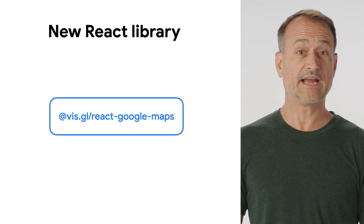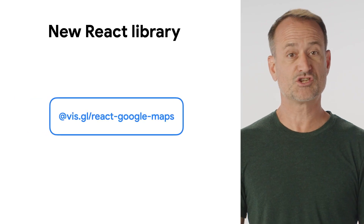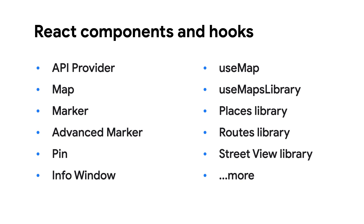It's the React Google Maps Library in the VizGL organization. React is a popular open-source framework for building front-end web user interfaces based on components that are driven by the state of data that changes over time. VizGL React Google Maps comes with a collection of React components to create maps, markers, and info windows, as well as a set of hooks to use some of the Maps JavaScript API services and libraries.